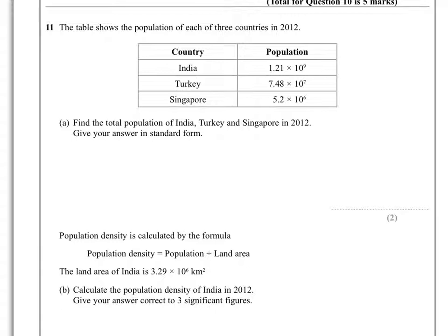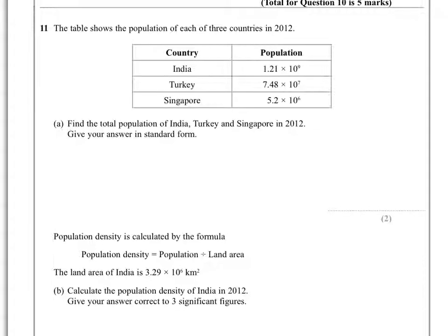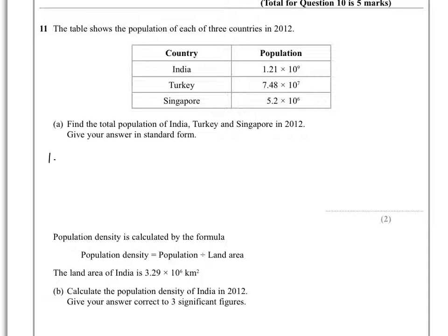Taking India first, India is 1.21 times 10 to the power of 9. That means there are 9 tens, so the decimal moves 9 places to the right, giving us 1,210,000,000.